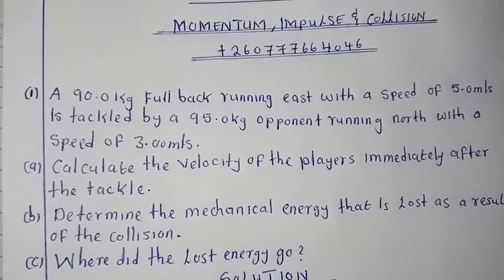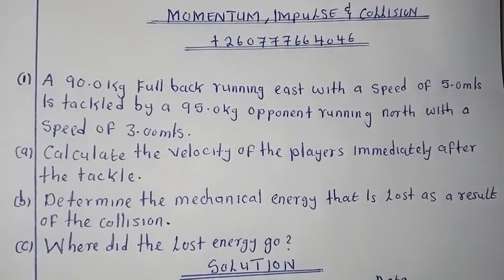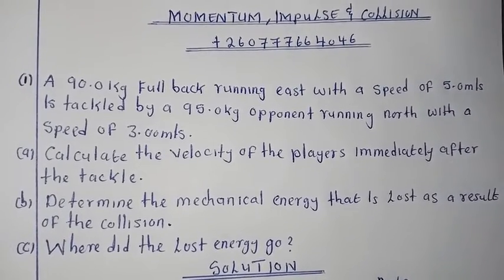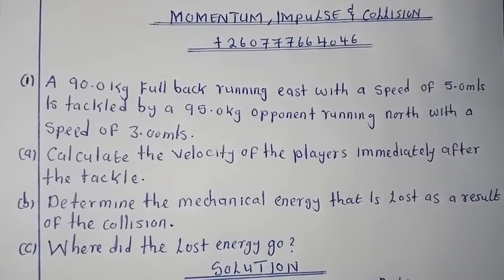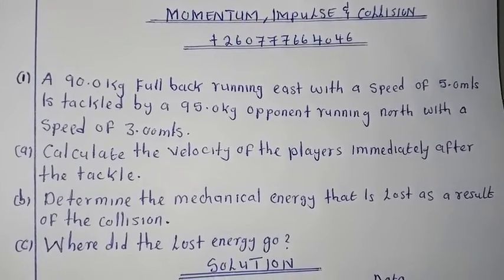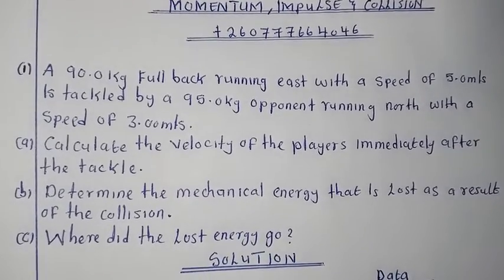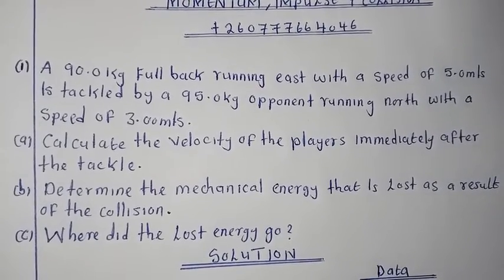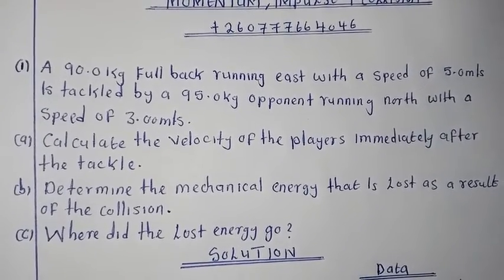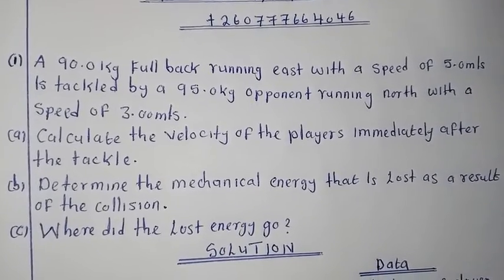A 90 kg fullback running east with a speed of 5 meters per second is tackled by a 95 kg opponent running north with a speed of 3 meters per second. The first question is asking us to calculate the velocity of the players immediately after the tackle, then determine the mechanical energy that is lost as a result of the collision, and where did the lost energy go.